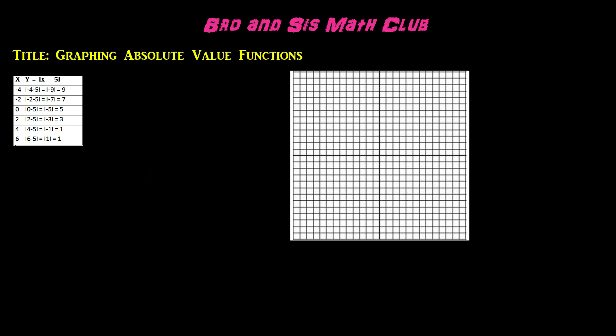Let's say that we have to find the absolute value of positive 3. Remember that this is the symbol for absolute value. How far is the number positive 3 from zero? Well, of course, we know that it is 3 points away.